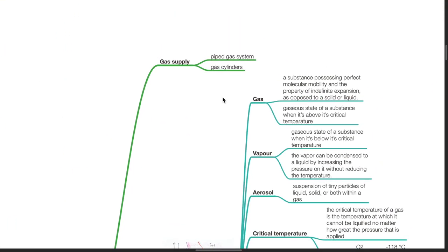Gas supply for medical purposes can come from piped gas system or gas cylinders.